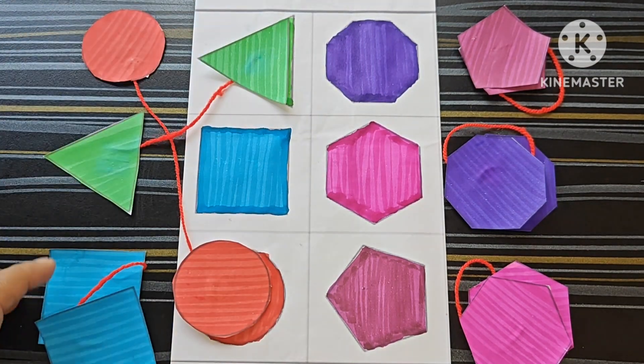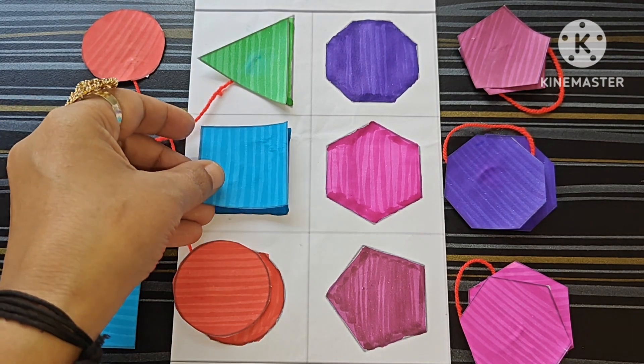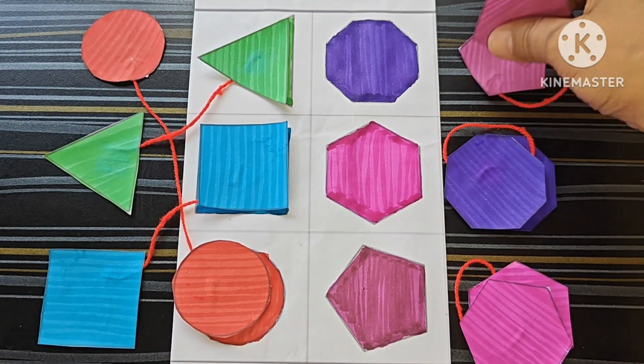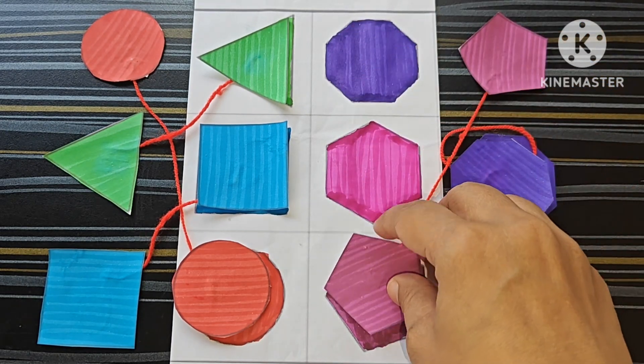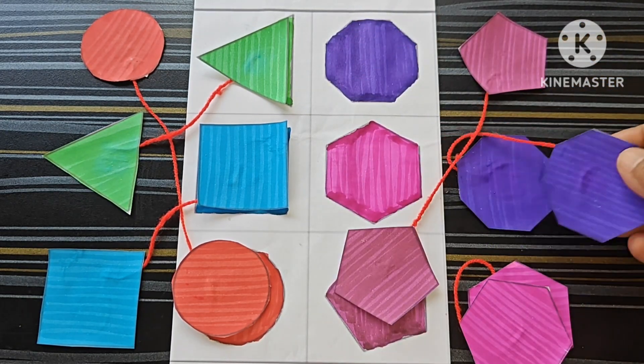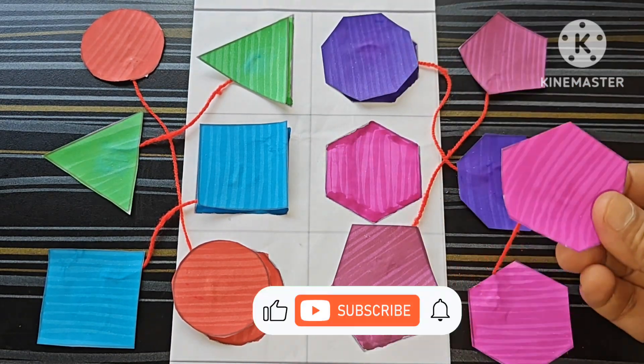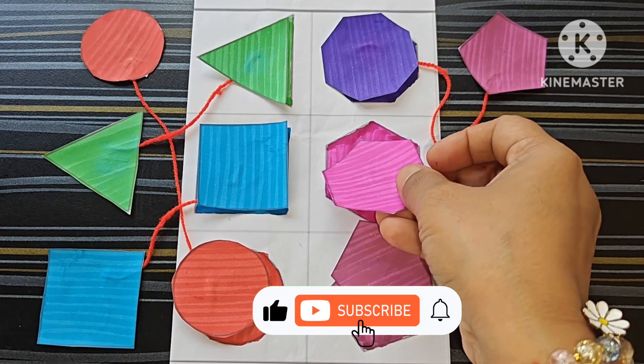This is square, here is the place. What is the place of pentagon? This pentagon is here. And this is octagon, this is here. This is hexagon, here is the place.